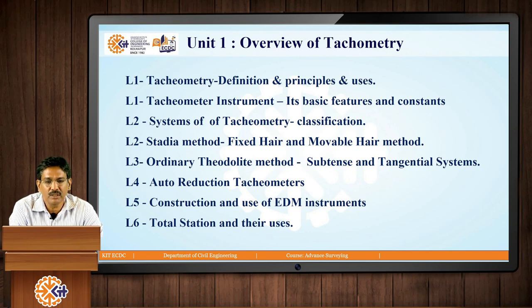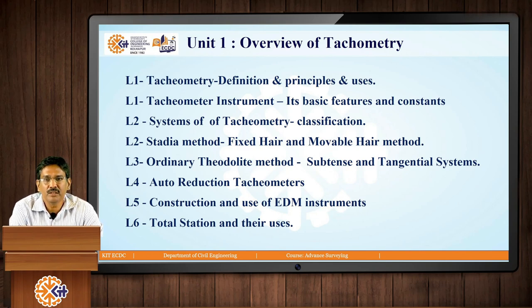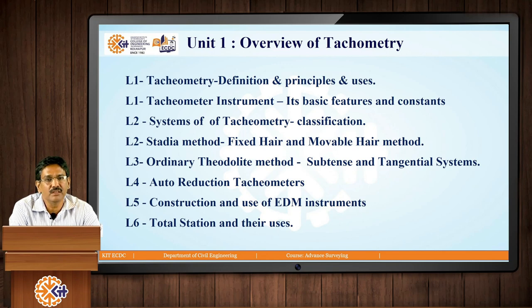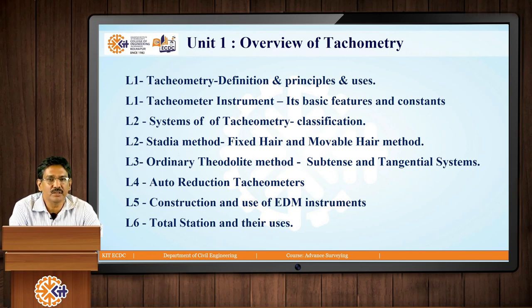These are basically methods done using the tachymeter. There are other methods as well where we do not use a tachymeter as such — we use the ordinary theodolite, which is the vernier theodolite. In this we will be learning the subtense and tangential systems. Then we will look at more advanced forms using auto-reduction tachymeters. Lastly, we will cover the most advanced contemporary technology in surveying, that is EDM machines. EDMs were developed in 1956 and have now reached very advanced levels; one such tool is the total station.